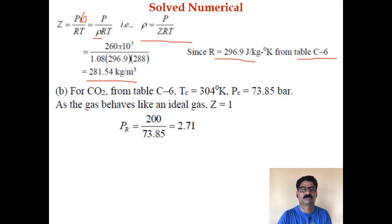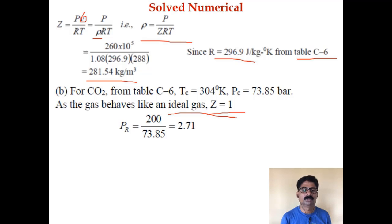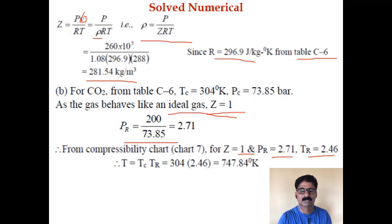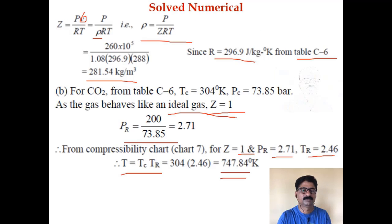For the second part: what temperature must 1.4 kg of CO₂ gas in a container at 200 bar be at to behave as an ideal gas? For ideal gas, Z = 1. From table C6, CO₂ has Tc = 304 K and Pc = 73.85 bar. Reduced pressure PR = 200/73.85 = 2.71. From the compressibility chart, for Z = 1 and PR = 2.71, TR = 2.46. Therefore T = TR × Tc = 747.84 K.